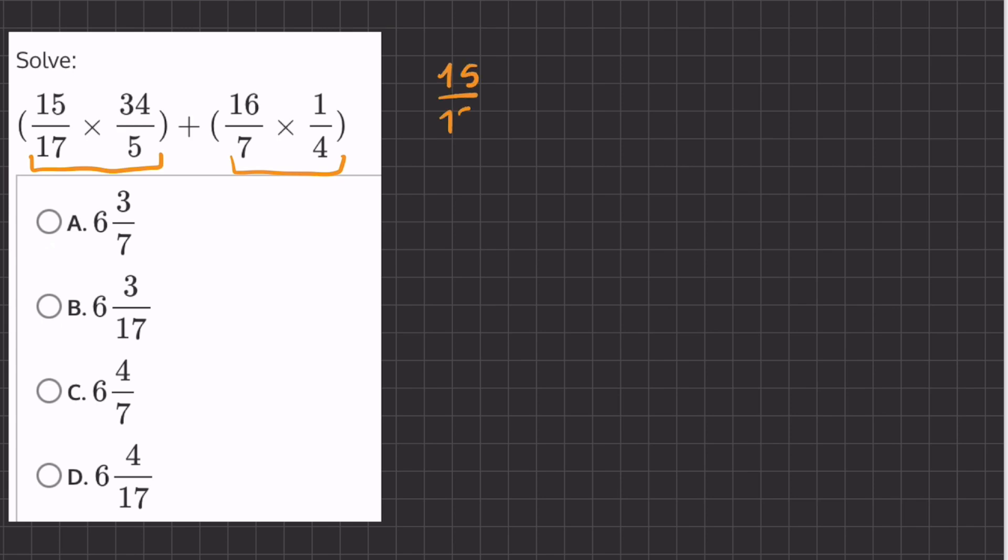We have 15 over 17 times 34 over 5. Now instead of multiplying right away we can use the commutative property of multiplication and switch our two denominators which will make our problem significantly easier to solve.